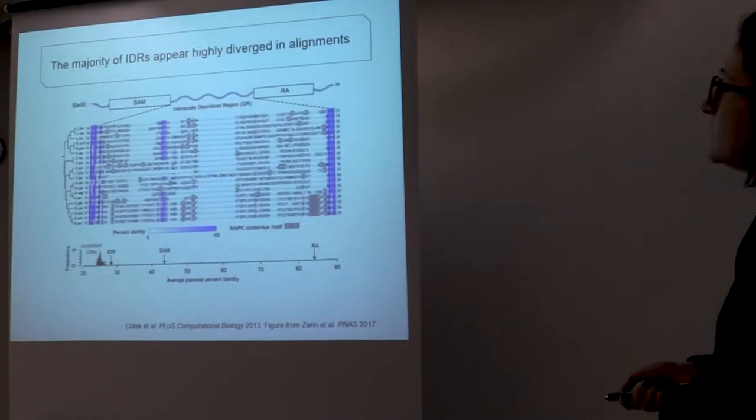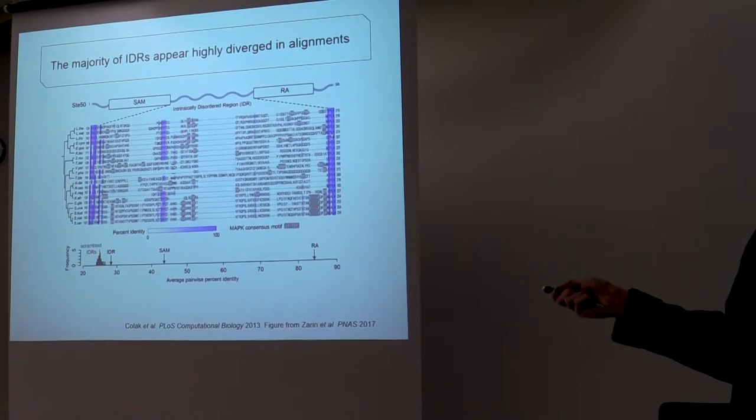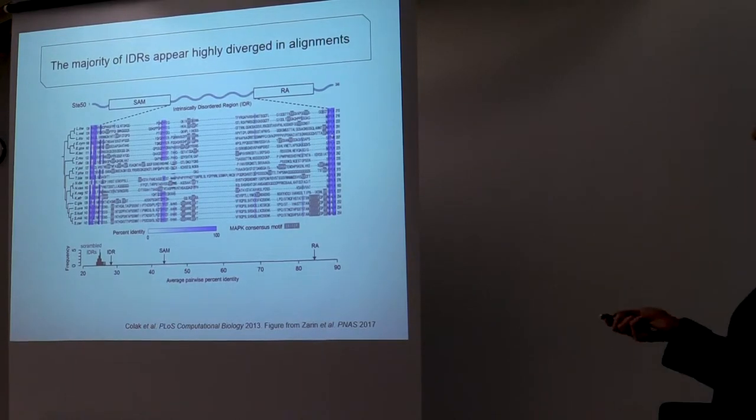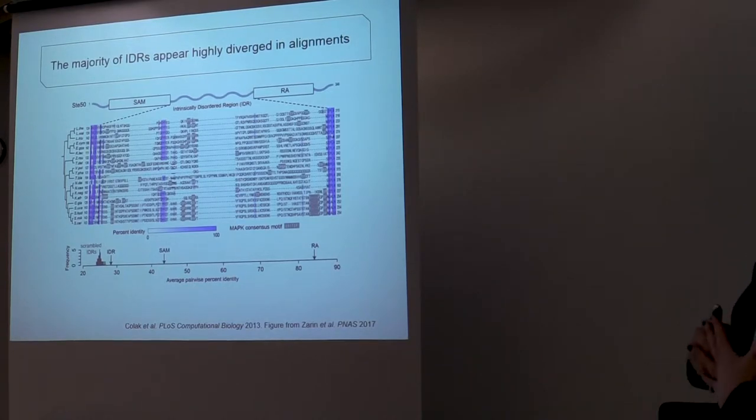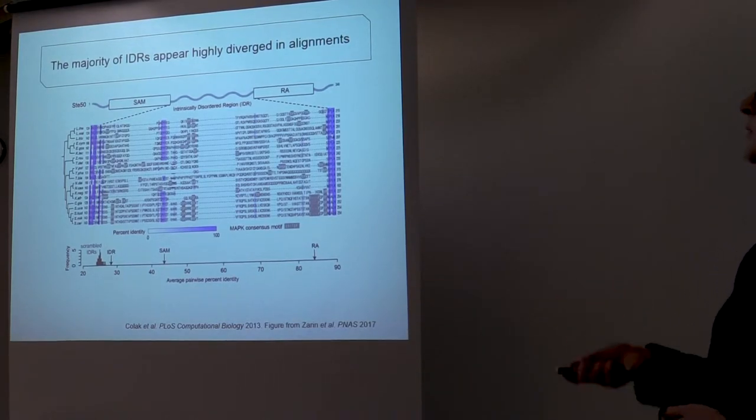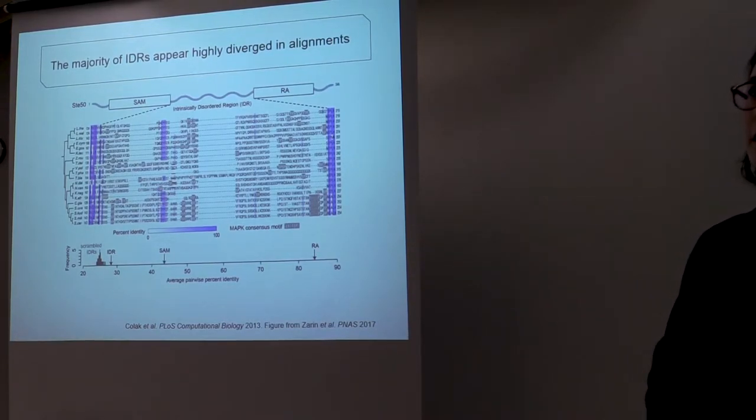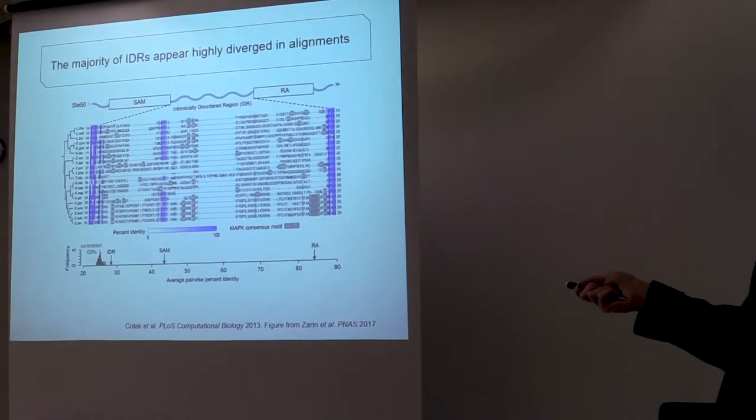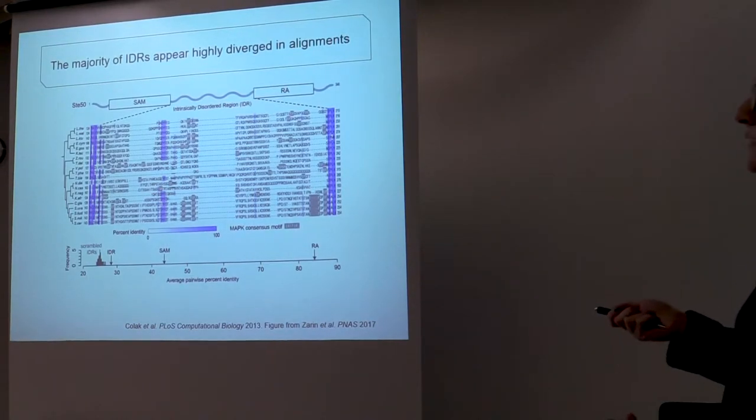So an example disordered region from that 95% of that pie chart is this one. Here I'm just showing you an example from the protein ST50 in budding yeast. And if you look at the protein alignment for this disordered region, you see virtually no homology, even though the flanking domains in this protein are very well conserved. So one question that arises is what in here, if anything, is functional? Is there anything going on in these regions?